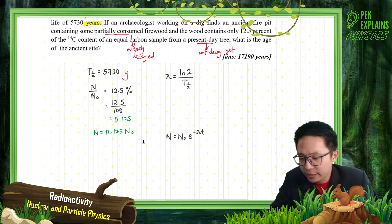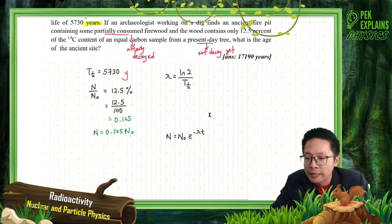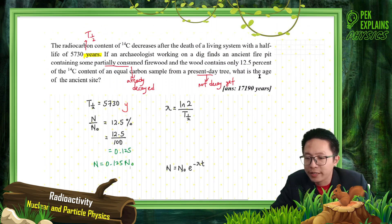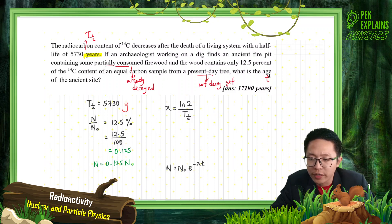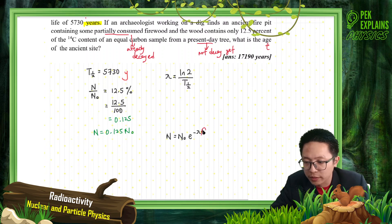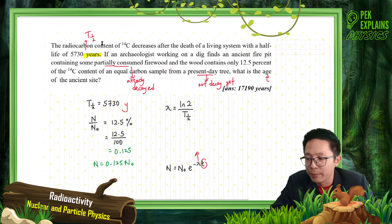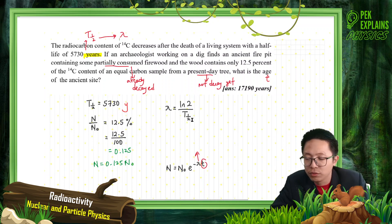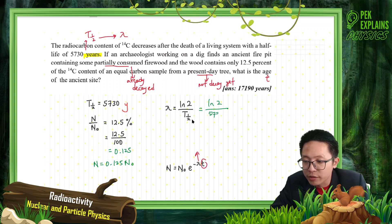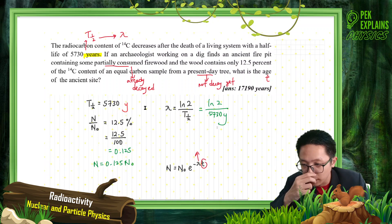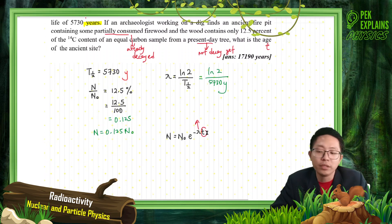Now I want to find the age of the ancient site. To find the time, I must use the radioactive decay formula. First, I need the decay constant λ. Since we're given the half-life, I can find λ directly: λ = ln2 / t½. The half-life is in years, so I'll keep λ in per year.